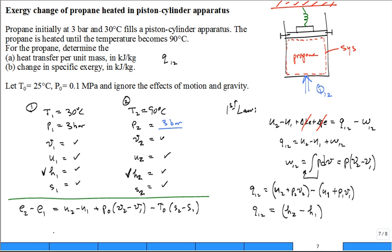And if you would like an answer for this problem, I have that e2 minus e1 is about 3.65 kilojoules per kilogram, and q1 to 2 is 113 kilojoules per kilogram.